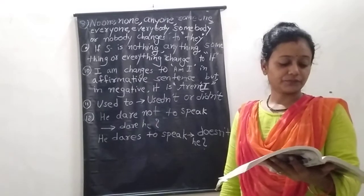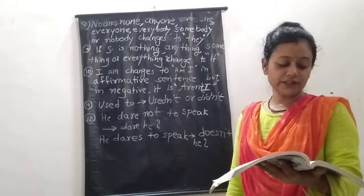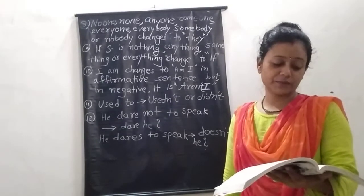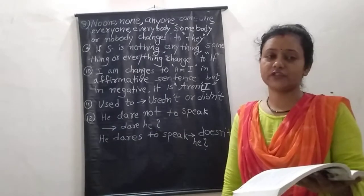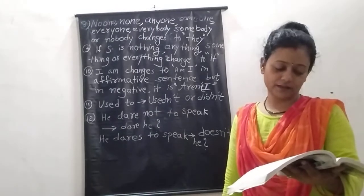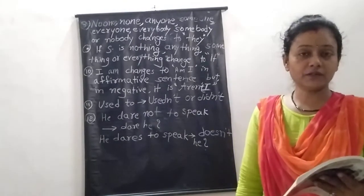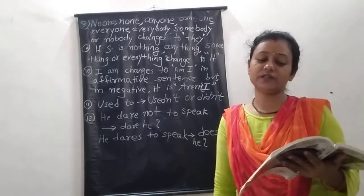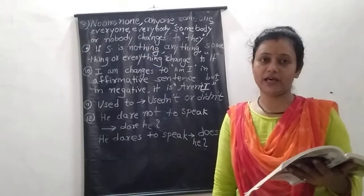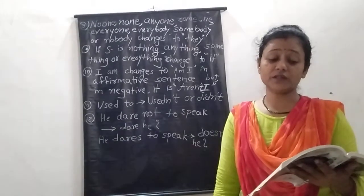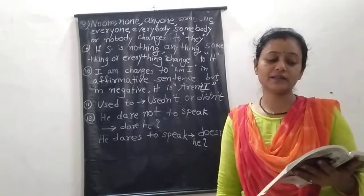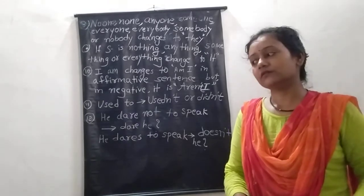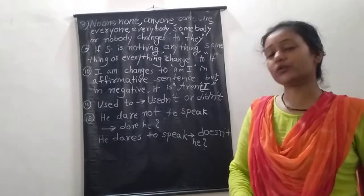If 'dares' is used as a main verb — 'He dares to speak like this' — then the question tag is 'doesn't he'. Another example: 'She used to go to temple.' 'Used to' will either change to 'didn't she' or remain as 'used to she'. These are all the examples and rules related to question tags.